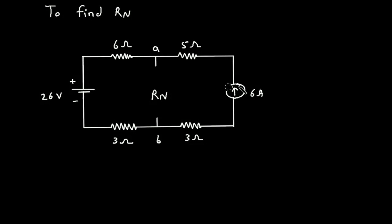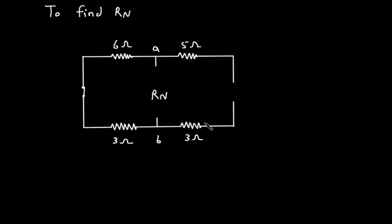Here we can see this is a current source, so this will be open circuited, and this is a voltage source, so this will be short circuited. Now the resistance between A and B will be our Rn. Here we can see this 5 ohm is open circuited, also this 3 ohm is open circuited. So therefore Rn is equal to only 6 plus 3, which gives Rn equal to 9 ohm.